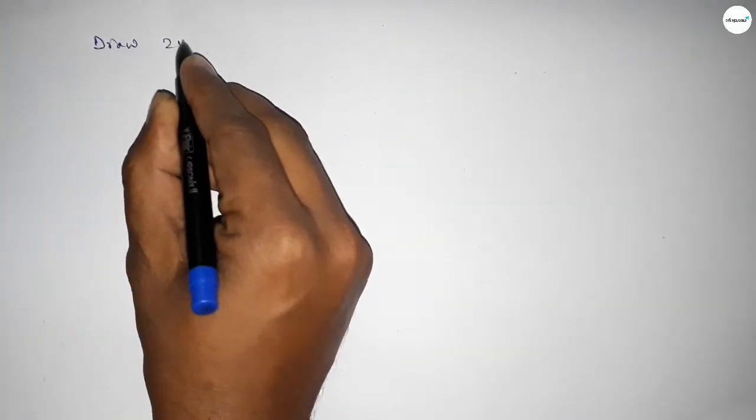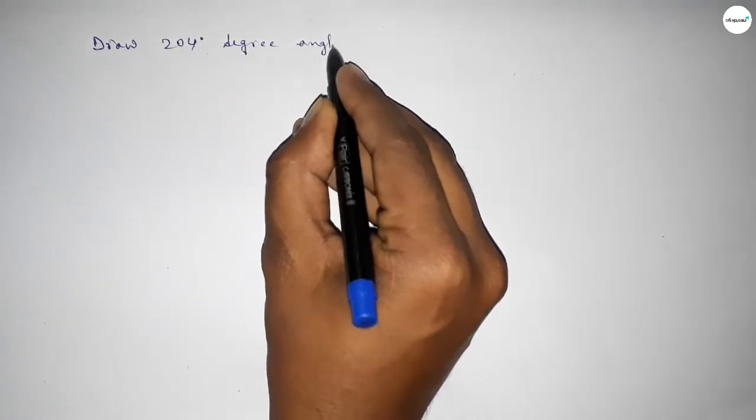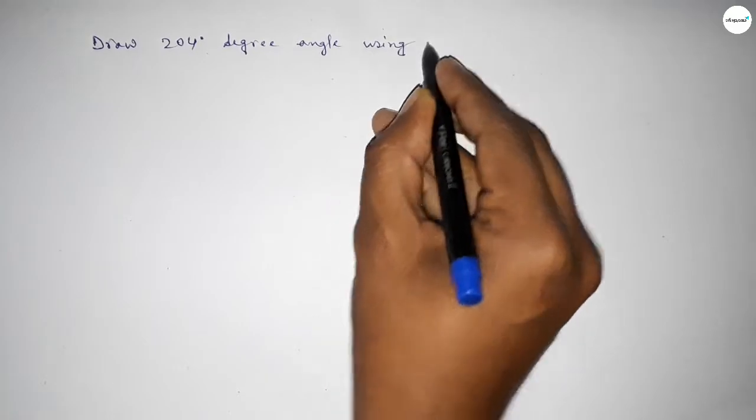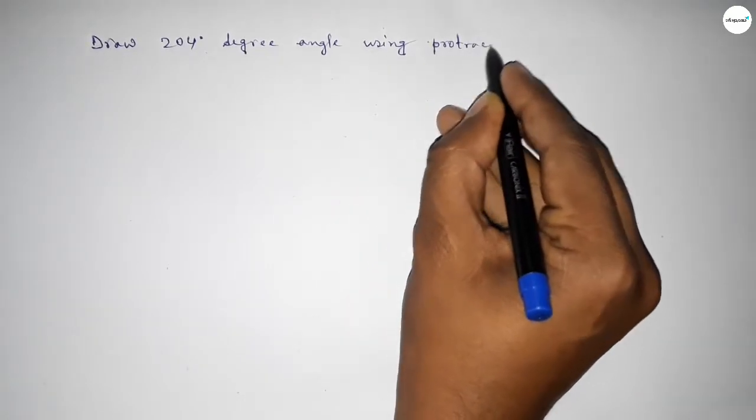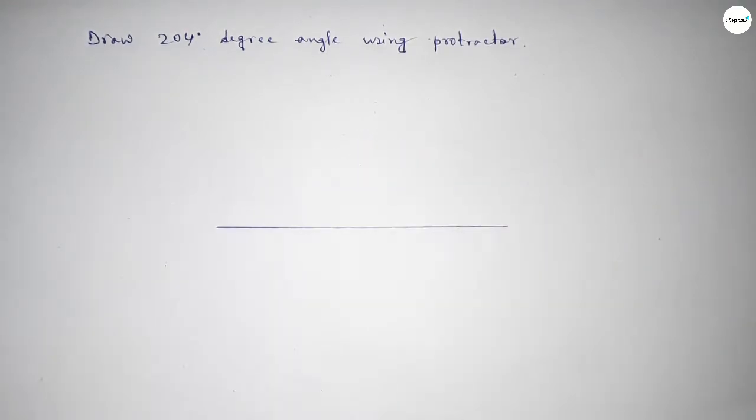Hi everyone, welcome to SI Share Classes. Today in this video we have to draw a 204 degree angle using a protractor. So let's start the video. First of all, we have to draw here a straight line of any length.